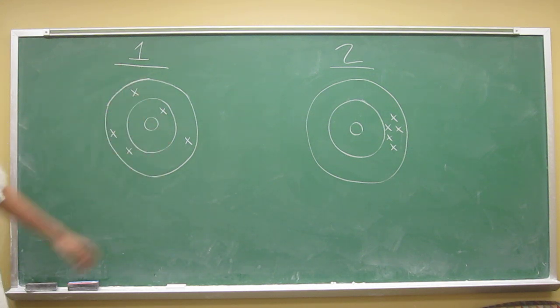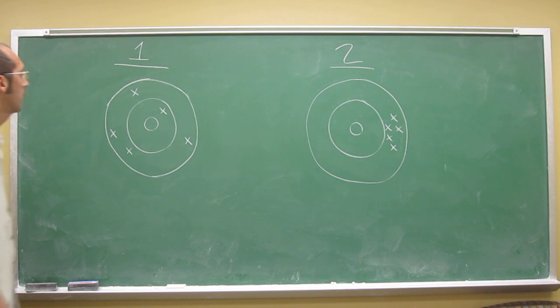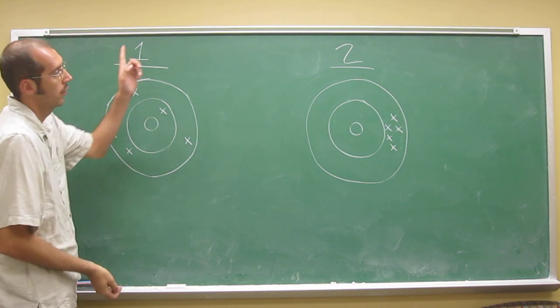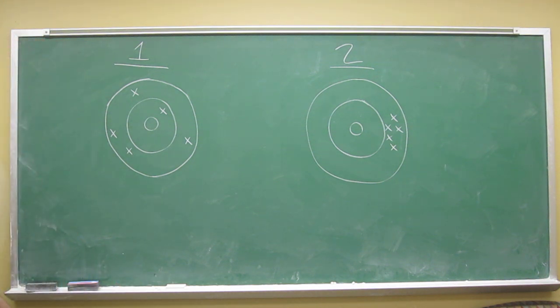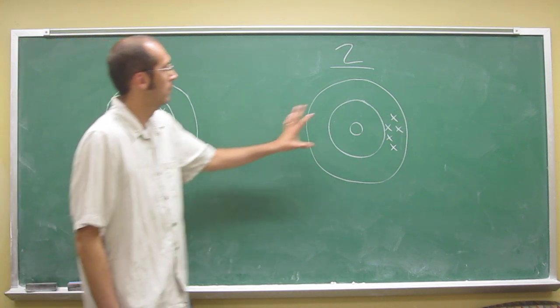If we're thinking about it like a dartboard here, that's what this is supposed to be. If you think about the X's being the player's throw, number one and number two both had five throws.